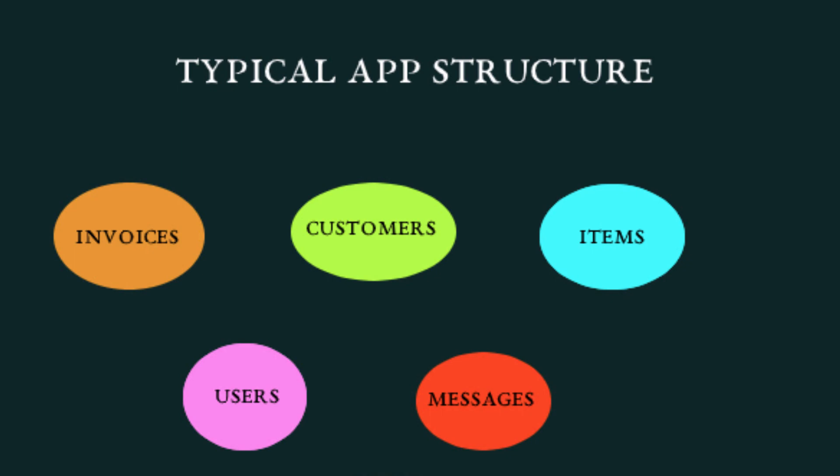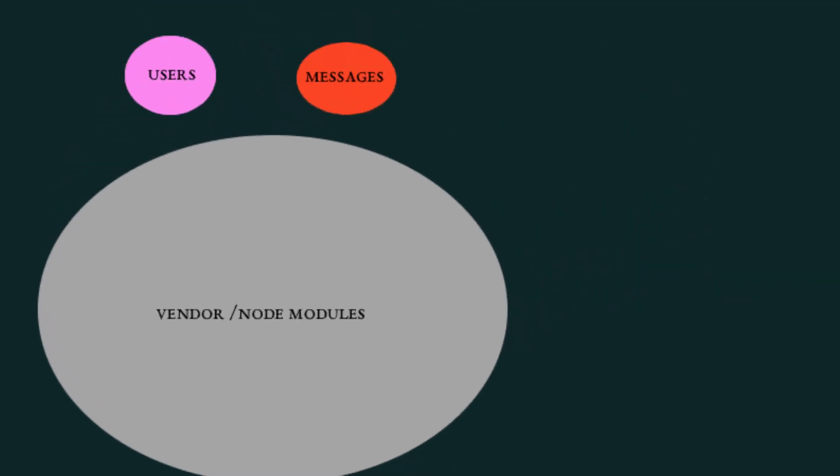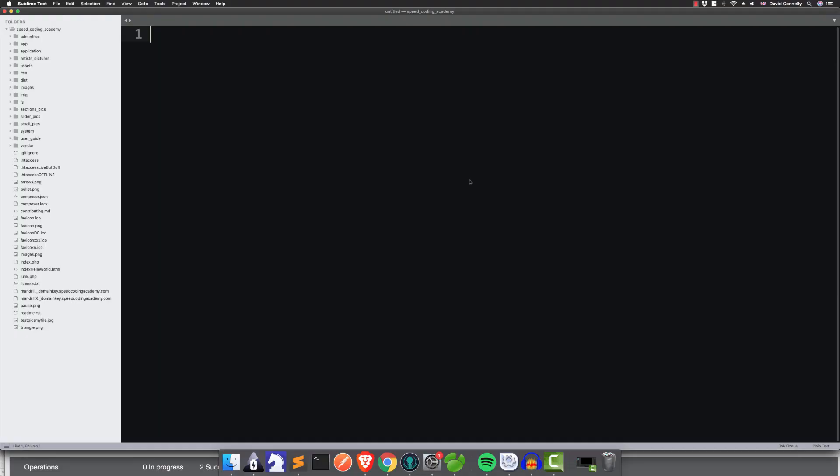And then what we typically have is this big, giant, stupid, ridiculous folder that's usually out of sight and out of mind. In the case of PHP, it's called Vendor. In the case of Node.js, it's called Node modules. And that's the folder that will contain all of our third-party libraries. Often this folder is oversized, and often it contains stuff that you'll never even use anyway, but it's just there.